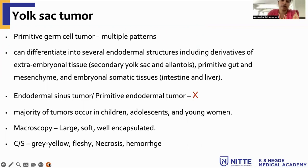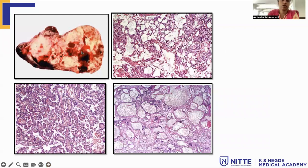On gross, they are large, soft, well-encapsulated lesions. On cut surface, you can see fleshy areas with large areas of necrosis and hemorrhage. This is the gross picture of yolk sac tumor, which is a large tumor with areas of cystic change, hemorrhage, and necrosis.